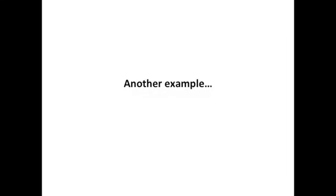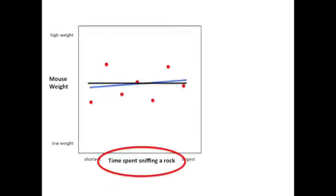Here's another example. In this example, we're comparing two possibly uncorrelated variables. On the y-axis, we have mouse weight again, but on the x-axis, we now have time spent sniffing a rock. Like before, we calculate the variation around the mean, and just like before, we got 32. However, this time when we calculated the variation around the blue line, we got a much larger value, 30.